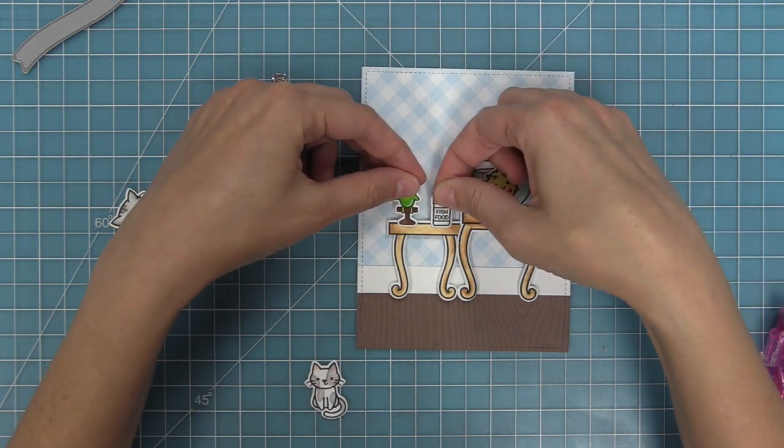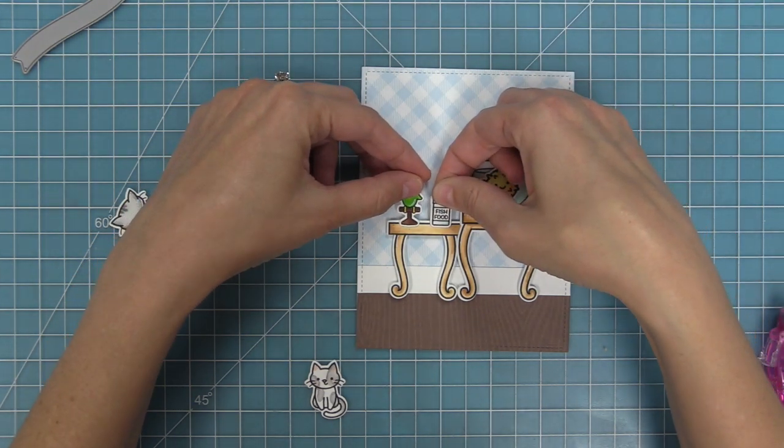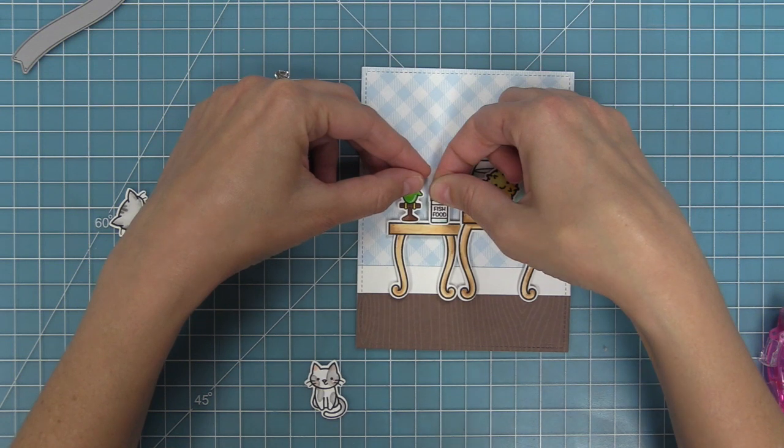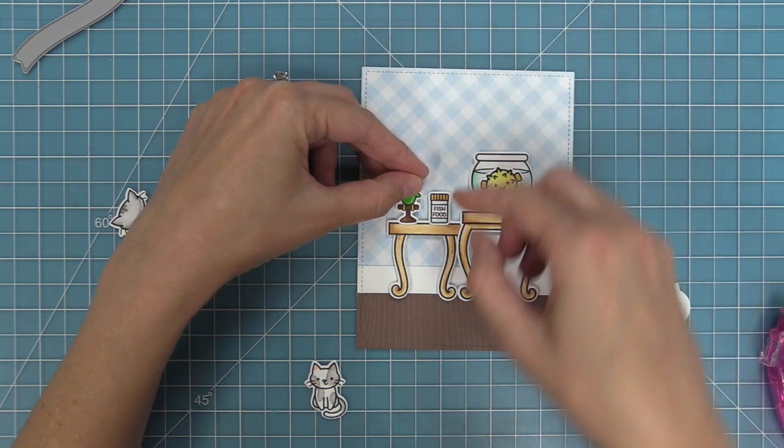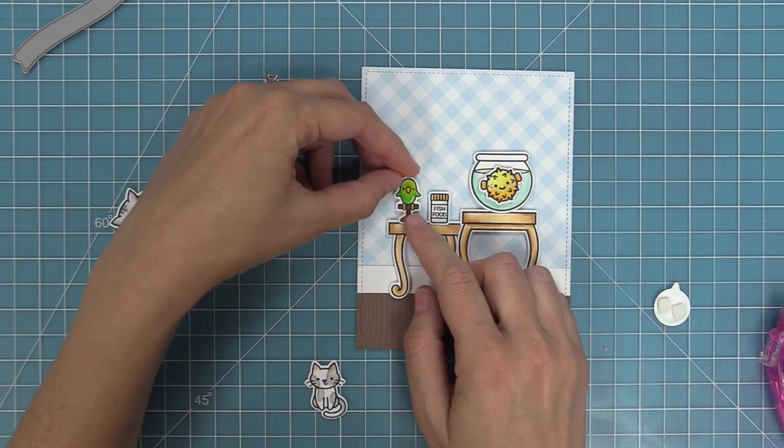We're going to be popping everything up here. We're going to add that cute little fishbowl with the puffer fish—I love him, I feel like I need to give him a name or something—and then there we've got the parrot and the fish food. I just love mixing and matching. We've got things from Keep on Swimming and Say What Pets and all of these cute little pet images go together so well.